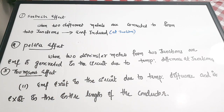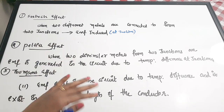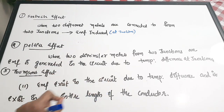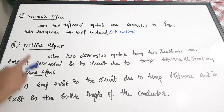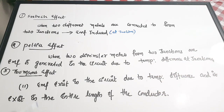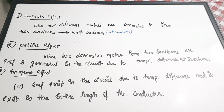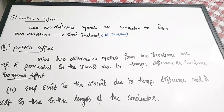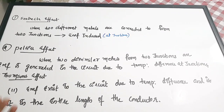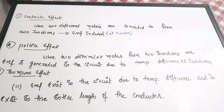The second effect is the Peltier effect, which is similar to the Seebeck effect. The Peltier effect states that when two dissimilar metals form two junctions, EMF is generated in the circuit due to the temperature difference at the junctions. So this second effect explains the cause of EMF generation — the first effect just states that EMF is generated, while the cause is explained in the second effect.